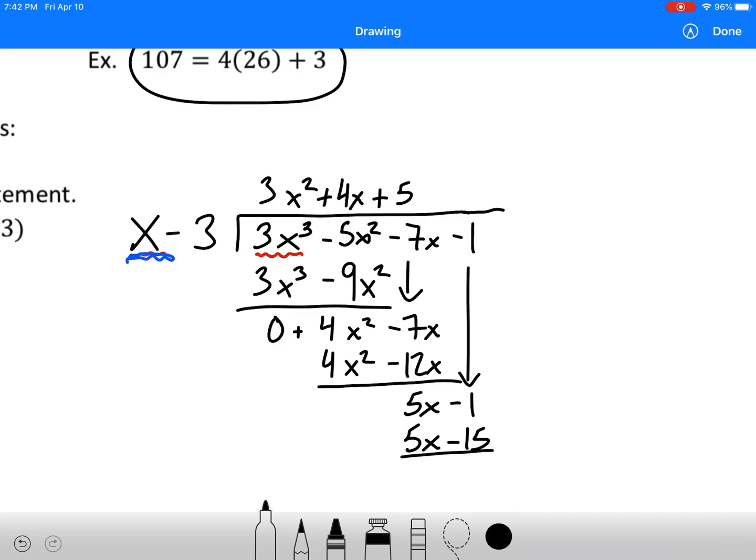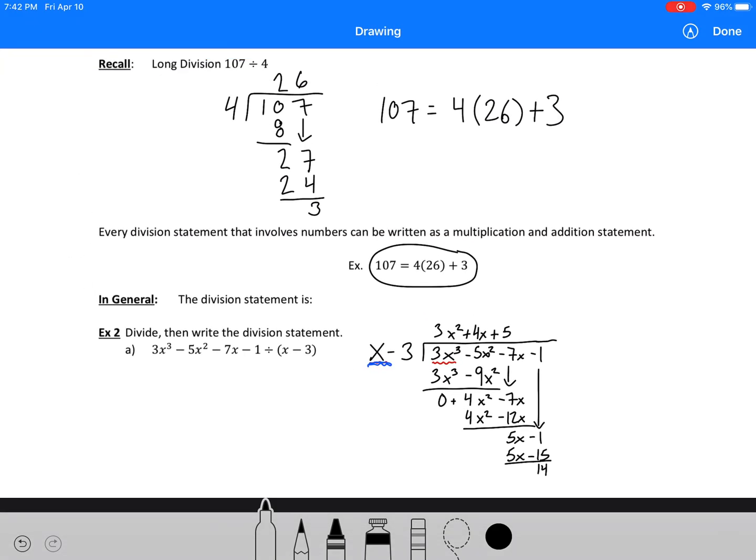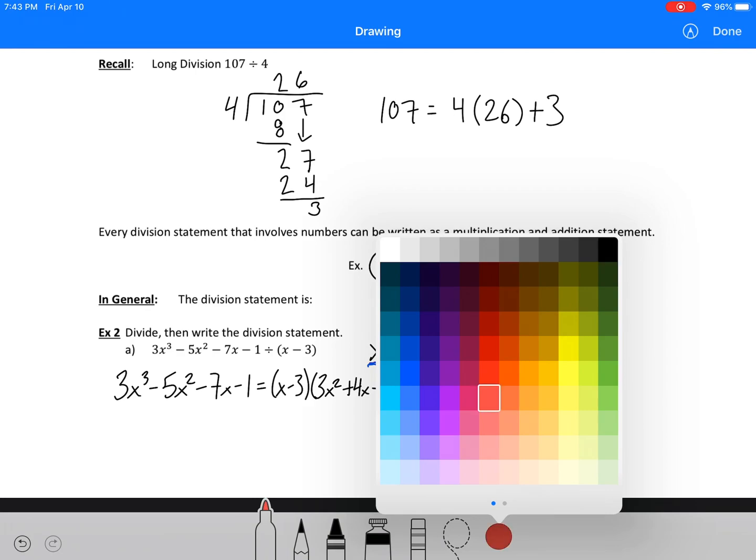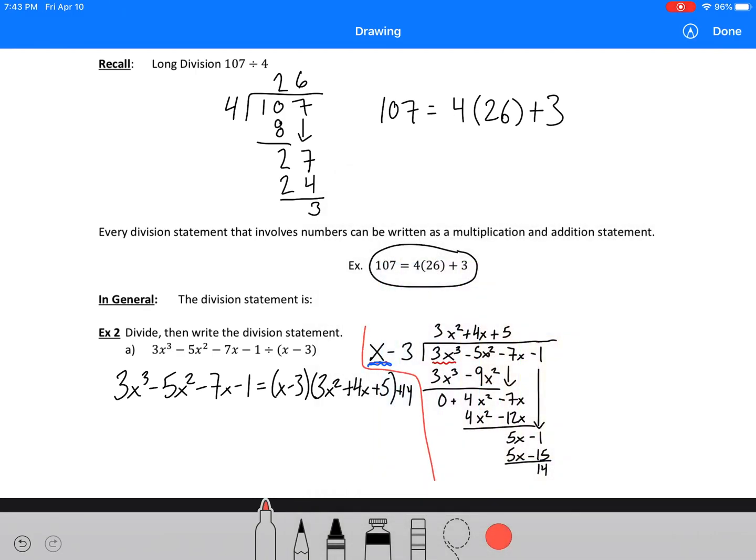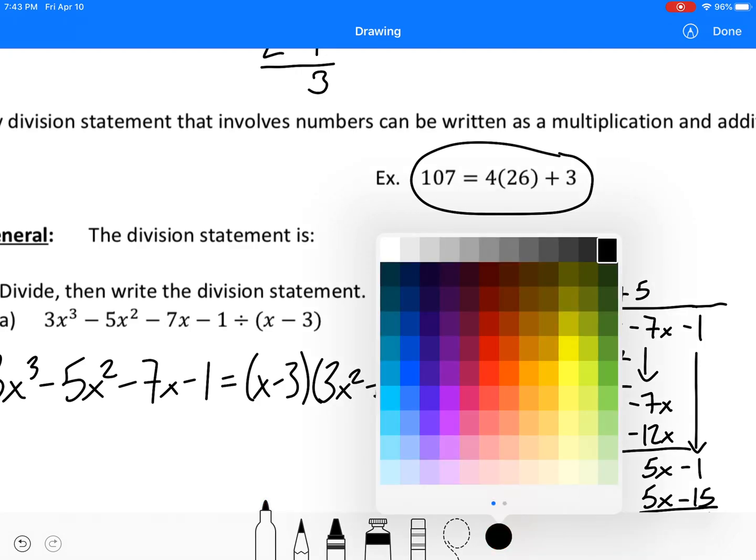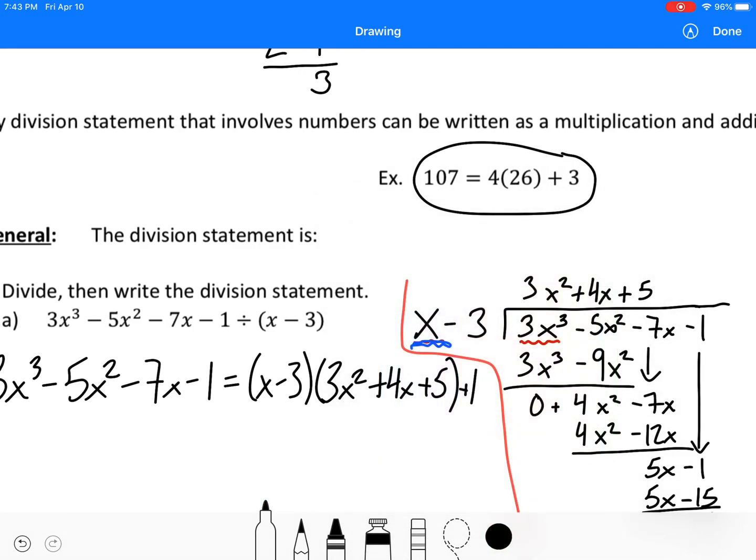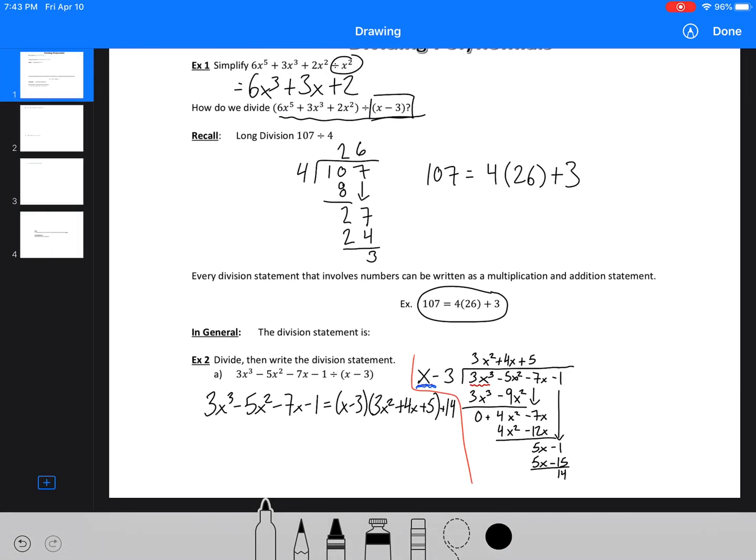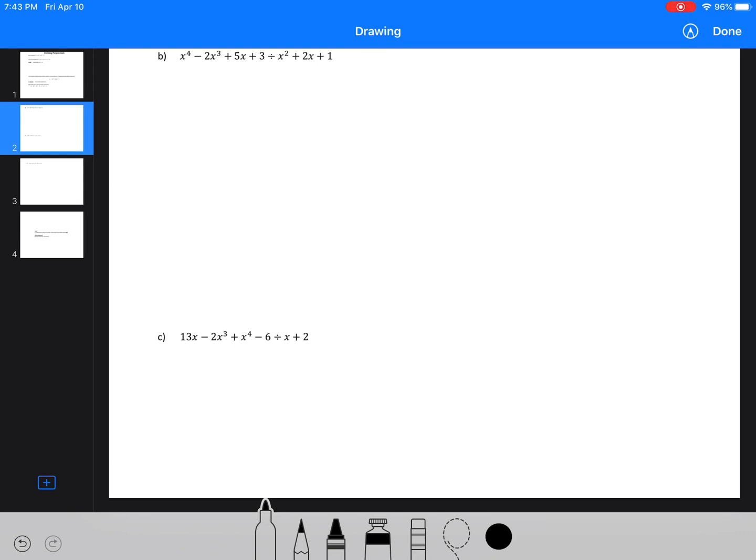Bring down the 1. Divide it out. So plus 5. We get 5x - 15. We've got a remainder of 14. So then what we would write here is 3x³ - 5x² - 7x - 1 = (x - 3)(3x² + 4x + 5) + 14. I know that's kind of close to our actual thing, so I'll just put a line here to divide it out. And there's our division statement.